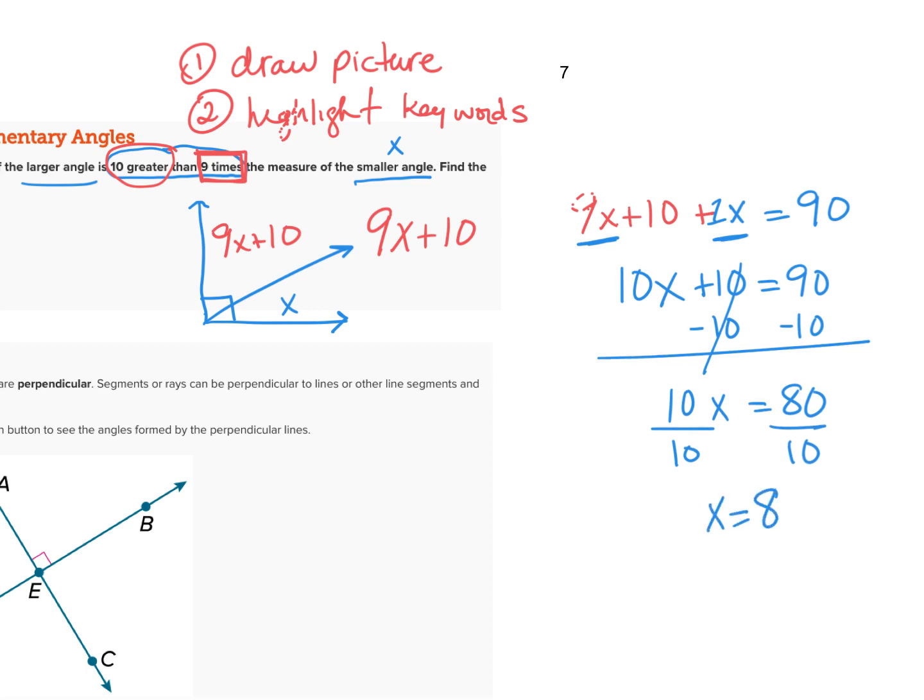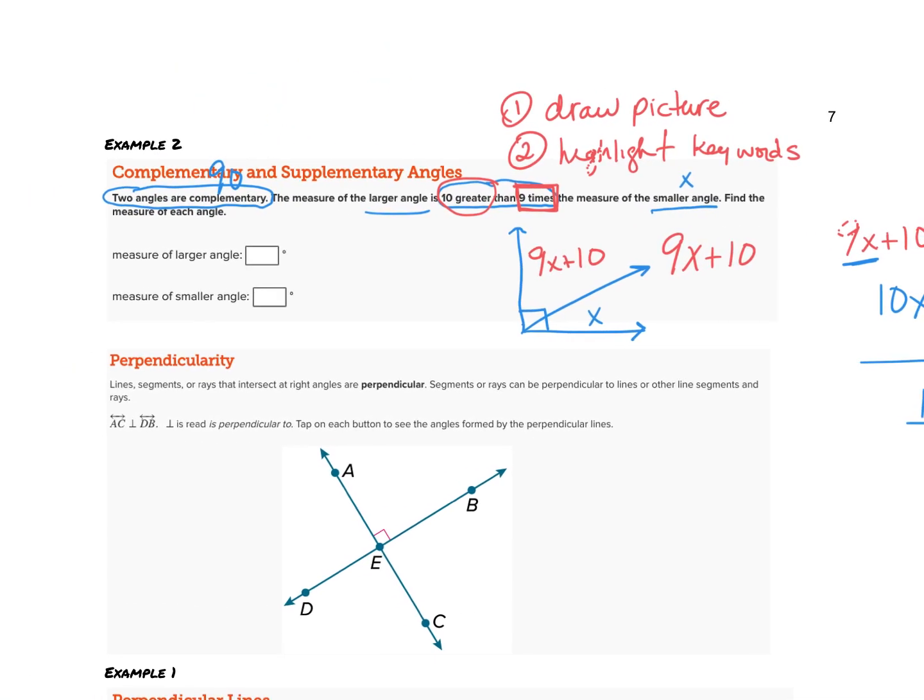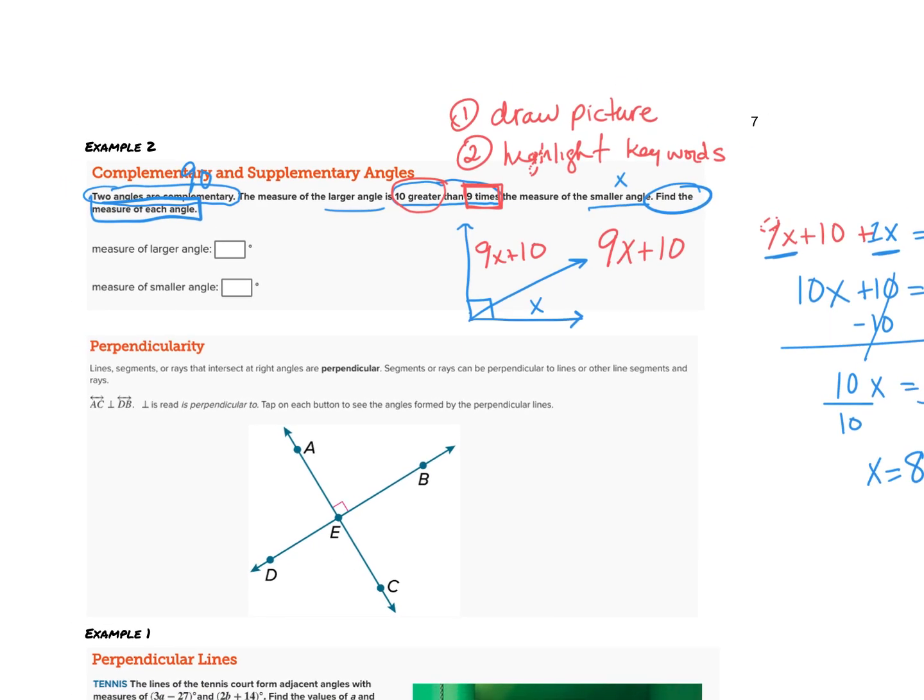Now don't fall into the trap of thinking that you're finished, because the question doesn't ask us what the value of x is—it asks us to find the measure of each angle. The good news is that we did, because x represents our smaller angle, then our smaller angle is 8 degrees. Now to find the measure of my larger angle, I'm going to replace x with 8, and I get 9 times 8 is 72 plus 10, which is 82. And 82 plus 8 does give me 90.